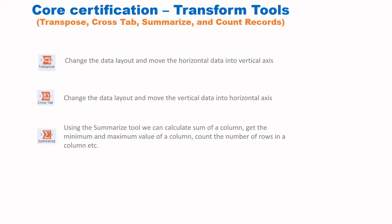Using the Summarize tool, we can categorize values in a particular field and for those categories calculate sum, minimum, maximum, and count the number of rows in a column. The Count Records tool lets us count the number of records passing through a particular tool.